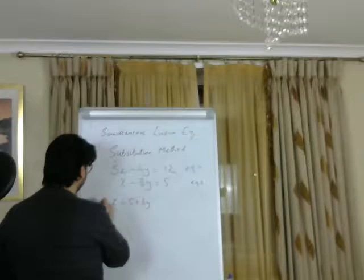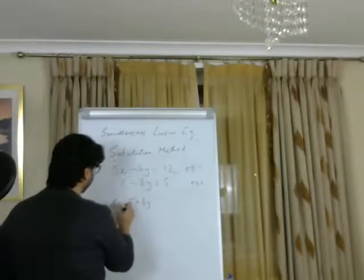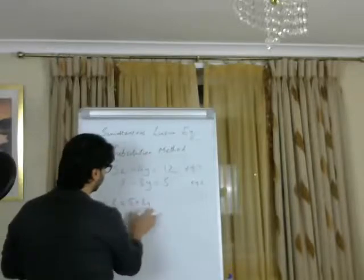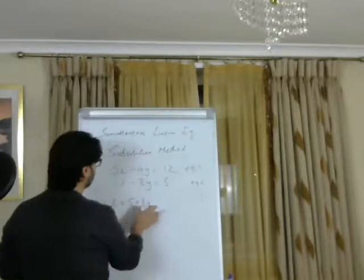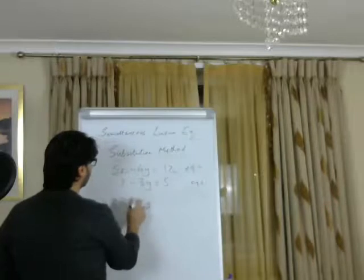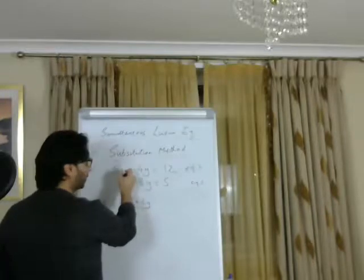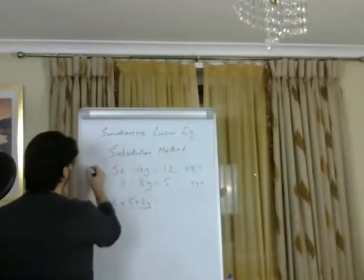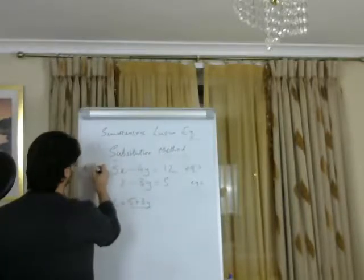What I need to do with this x, because x equals 5 plus 3y, is substitute this part into x here in the first equation. We're talking about simultaneous linear equations, so we draw these straight lines here.